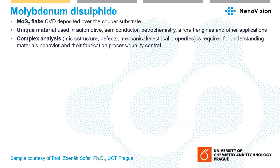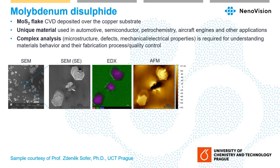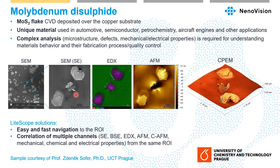Another low-dimensional material example: a molybdenum disulfide flake deposited on a copper substrate. This unique material could be used in automotive, semiconductor, chemistry, or aerospace industries. We need to understand the microstructure, defects, mechanical properties, and fabrication processes. We measured secondary electrons, backscattered electrons, EDS composition, and topography — with mechanical properties also measurable — and correlated all these channels together.